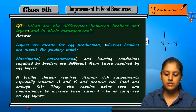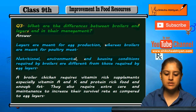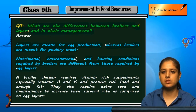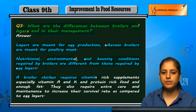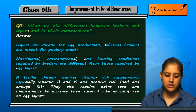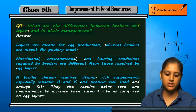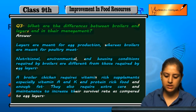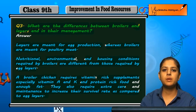The nutritional, environmental, and housing conditions are different for broilers and layers. Broiler chickens require vitamin-rich supplements — especially vitamin A and vitamin K — and protein-rich, high-fat foods. They require extra care and maintenance to increase their survival rate as compared to egg layers.